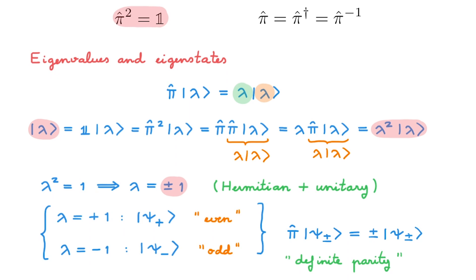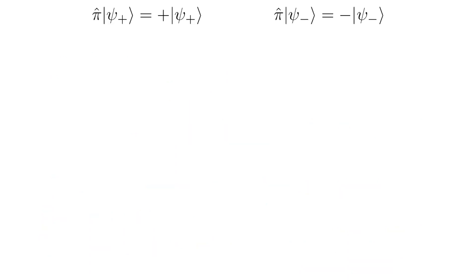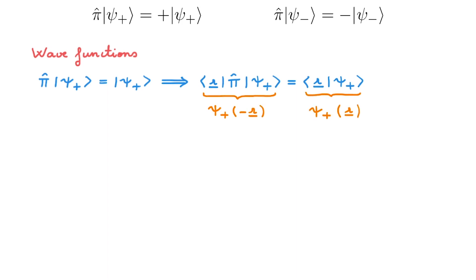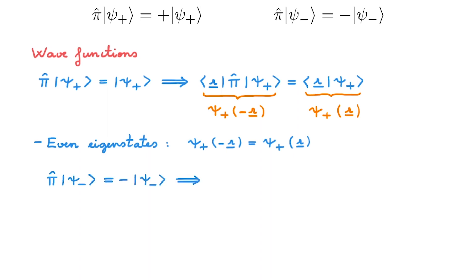To understand why parity eigenstates are so common, you should check out the video on even and odd operators. We showed earlier that a powerful way of determining the action of the parity operator on a general state is to study the action on the associated wave functions. So we'll now investigate what even and odd states look like in terms of wave functions. Projecting the defining equation of an even state onto the position basis, and using the fact that the parity operator reflects the wave function about the origin, we see that even eigenstates are represented by even wave functions. Similarly, projecting an odd state onto the position basis gives an odd wave function.